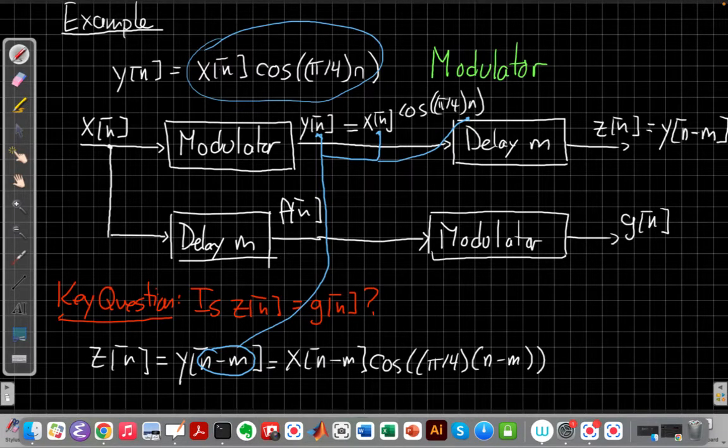Right so I'm replacing all the n's in the equation by n-m. Okay so now that I've done that I look and I say okay now I have an equation where I've written z in terms of things that are just the original input x. I can stop here because this is something I'll be able to compare against and now I need to go do the same thing on the other branch.